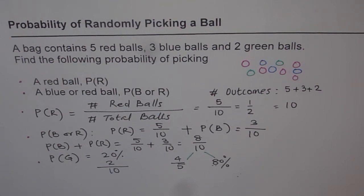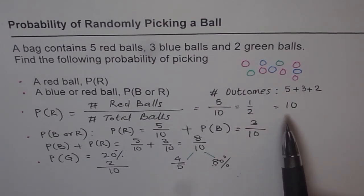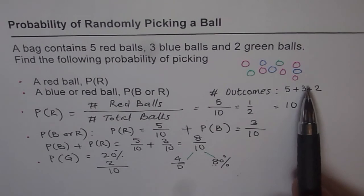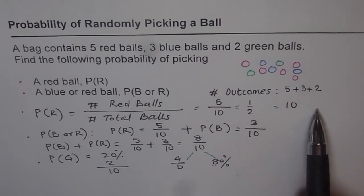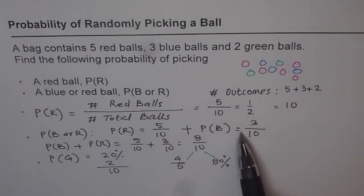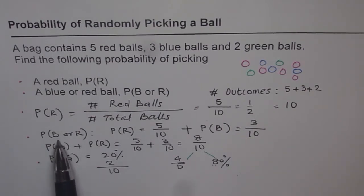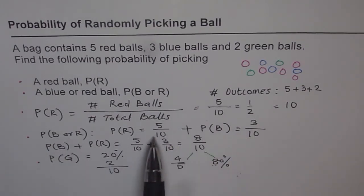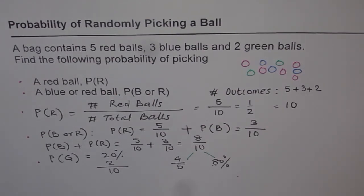What you've learned here is: if we randomly pick something from a group of items, the probability of picking that item is the ratio of the favorable number of items to the total number of outcomes. And second, if you are considering picking this or that, then the probabilities add up, because there are more chances of getting either of the two. Whenever it is either of the two, the probabilities get added up.